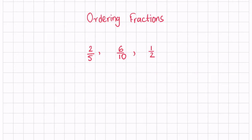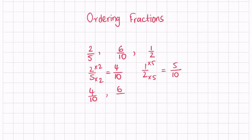Two fifths, six tenths, and a half all have different denominators. We can see that five and two are both factors of ten, so we can change the denominators into ten. Let's go ahead and multiply two fifths by two — we multiply the numerator by two as well because of the rule of equivalent fractions — that gives us four over ten. And changing a half by multiplying numerator and denominator by five gives us five over ten.